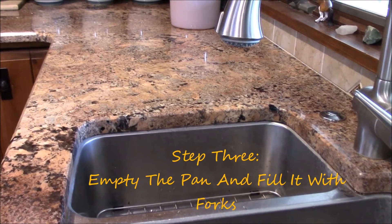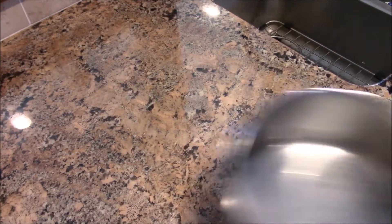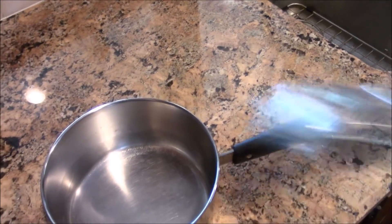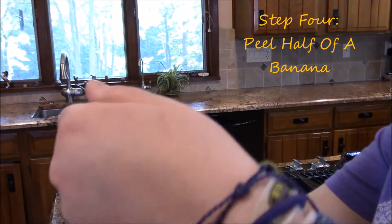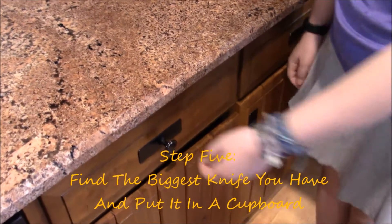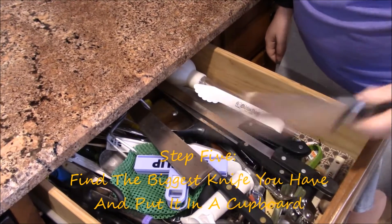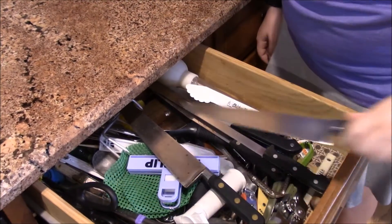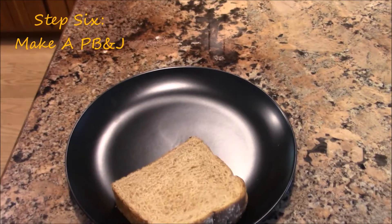Once the water has boiled, dump it into the sink and fill a pan up with forks. Peel half a banana. Take the biggest knife you can find out of a cupboard and then put it back in. Then, make a PB&J.